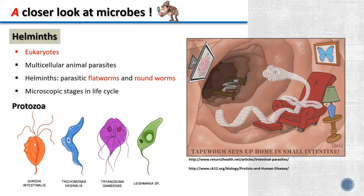The last one is the helminths, or multicellular animal parasites. A group of eukaryotic organisms consisting of flatworms and roundworms, collectively referred to as helminths. Although they are not microorganisms by definition since they are large enough to be seen with the naked eye, they live part of their life cycle in microscopic form. Since parasitic helminths are of clinical importance, they are often discussed along with other groups of microbes.